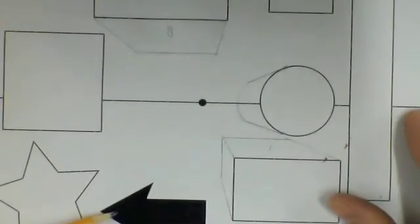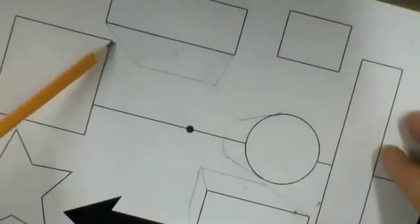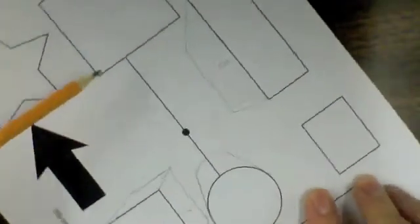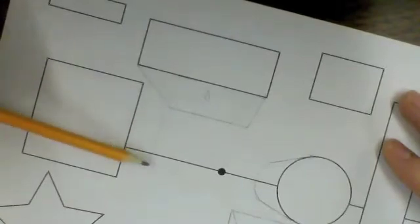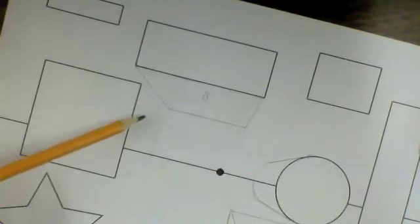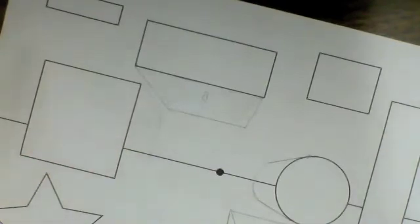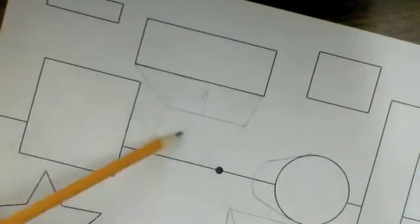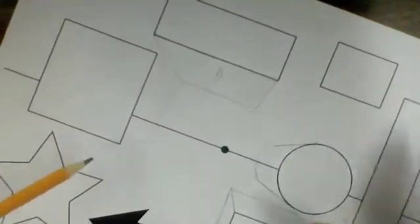As I said before, anything below the horizon line you'll see the top, anything above the horizon line you'll see the bottom. If something is directly on the horizon line you will not see the bottom or top, instead you will simply see the side. That's what I'm doing right now. I'm not using my ruler for this one just to show you that if you can kind of visually see it going back to that point and it's kind of a looser drawing you don't have to necessarily use a ruler.